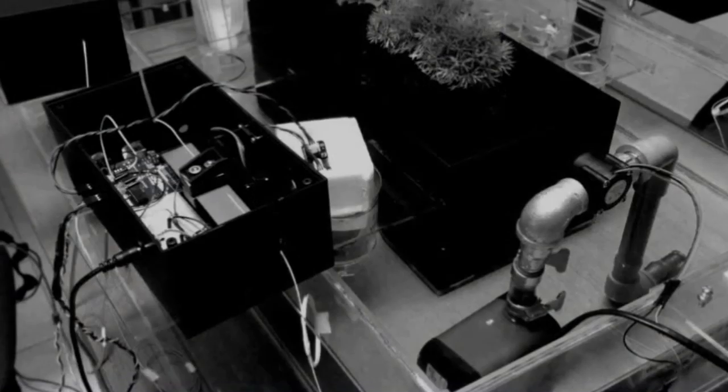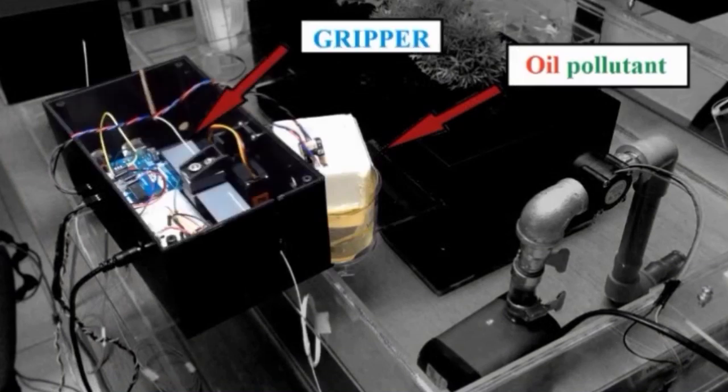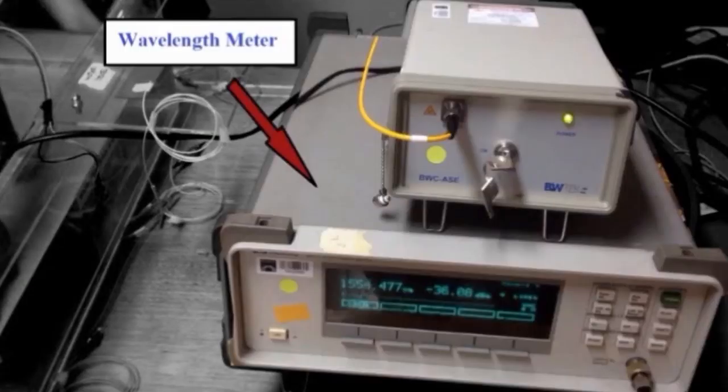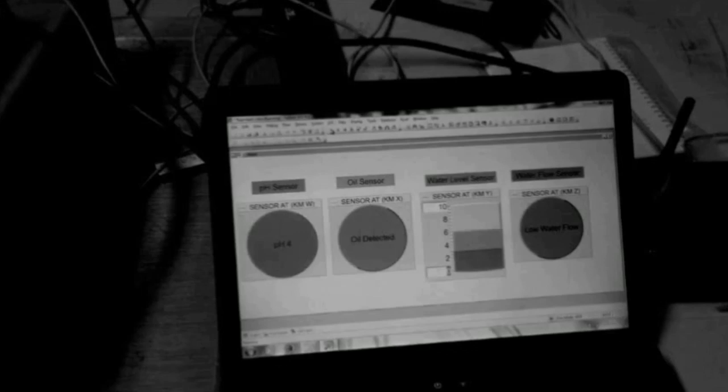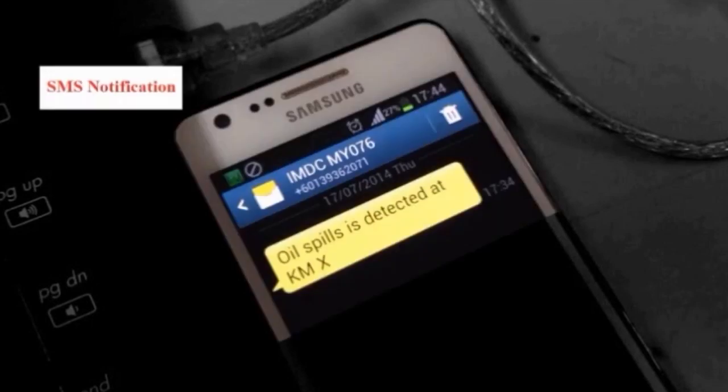The sensor is submerged in a beaker of water containing oil pollutant. Then the gripper starts to respond and changes the wavelength of the FBG. The wavelength meter measures the wavelength change in the FBG. Next, the graphical user interface of the oil sensor turns red to indicate there is an oil pollutant detected by the system. Finally, the system will send an SMS notification to the person in charge.